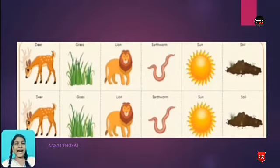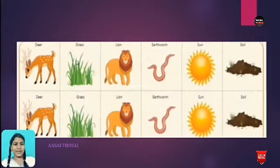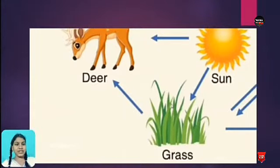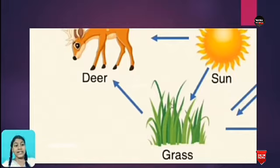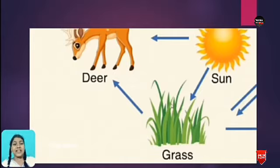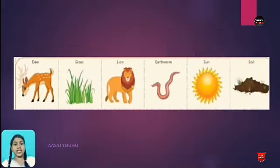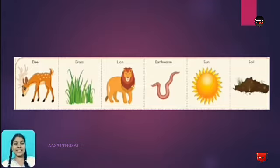Take your notebook and write: deer, grass, lion, earthworm, sun, and soil. After writing, you should do some process — the deer depends on grass, the grass depends on the sun, and you should make connections like this. Make a food web diagram using deer, grass, lion, earthworm, sun, and soil. I'll give you one minute — start now.